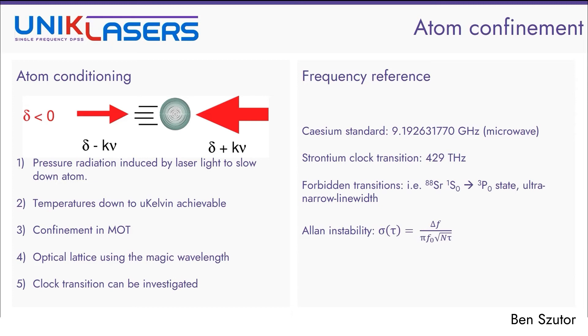The current time or frequency reference that we usually use is the cesium standard, which is at 9.19 GHz. Since it is in the microwave range, we use this standard to define the second. One example, the strontium clock transition is 429 THz, which is the frequency of a forbidden transition from a singlet to a triplet state, which is inherently very narrow linewidth. Using this much higher frequency, we can assume a better accuracy. As the Allen instability shows here on the bottom, the instability is proportional to the linewidth. So the lower the linewidth, the lower the instability. Therefore, the better the stability is. And we also have N, which is the number of trapped atoms, and tau, which is the integration time. So if we inspect the atoms for longer or if we have more atoms confined, then we can also achieve better stability.